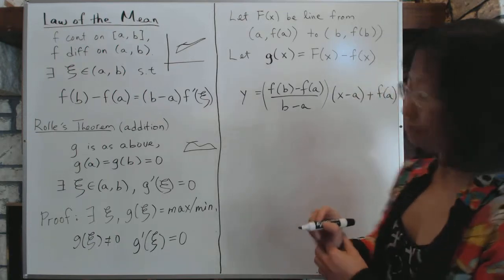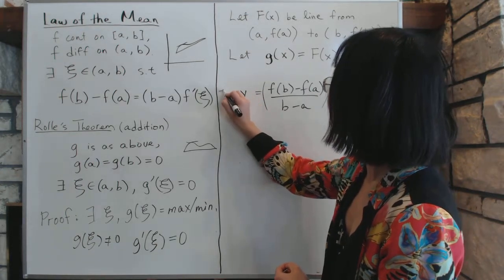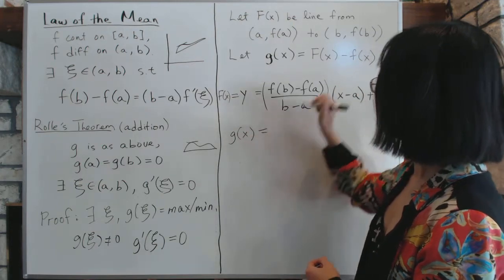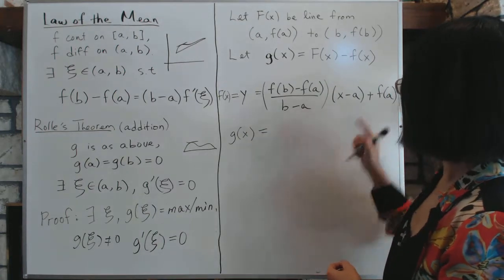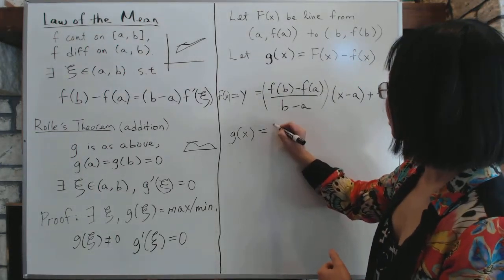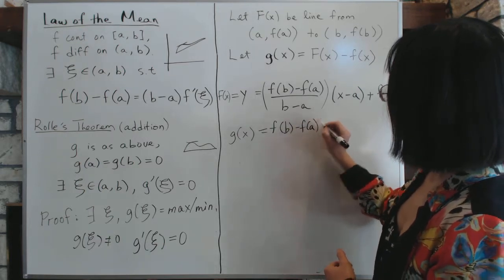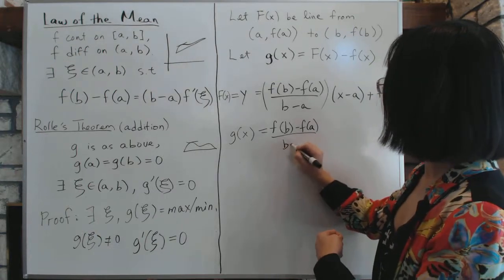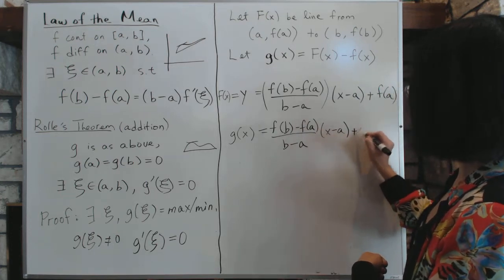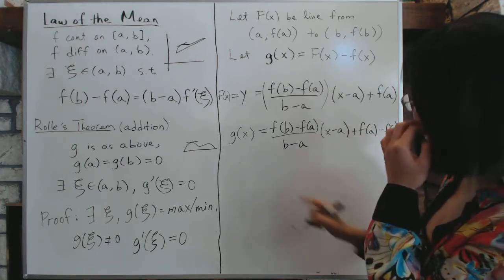So we will have, this is equal to f(x). So then g(x) is equal to the two subtracted. It's just this whole thing minus F(x). We'll write this whole thing down. So it's [f(b)-f(a)]/(b-a), that's y₂ minus y₁, times (x-a), plus f(a) minus F(x). So that's the entire function.